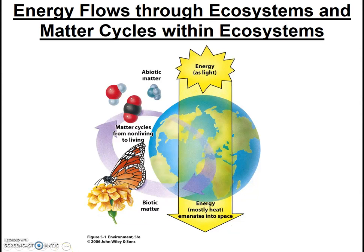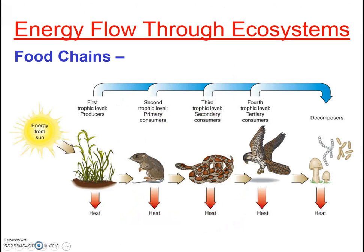Previously, we stated that the Earth is energetically open and materially closed. We know that the Sun is most ecosystems' primary energy source, and it travels through ecosystems through food chains, starting with photosynthetic organisms like plants that harness the Sun's radiant energy and turn it into chemical energy within their cells.